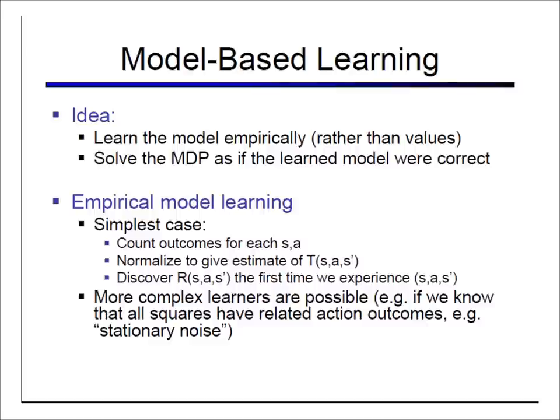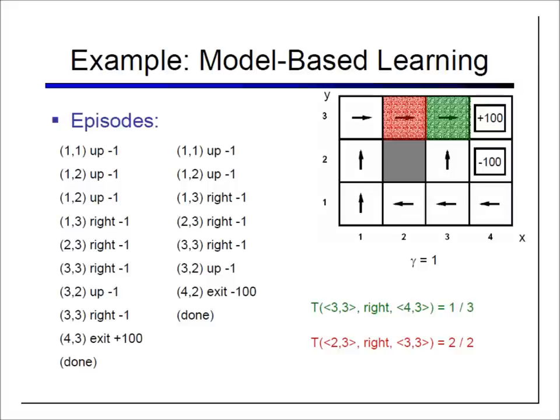For example, to estimate the probability that from state 3,3 taking action right leads to state 4,3: I was in 3,3 and took right — once I went to 3,2, once to 4,3, once to 3,2. So the probability is 1/3. We can now estimate all transition probabilities and, once we have them, run value iteration to solve the MDP.